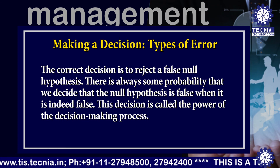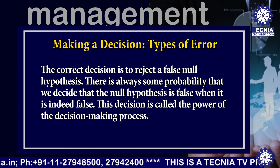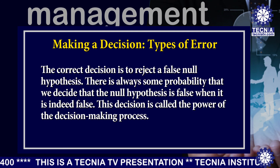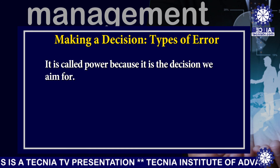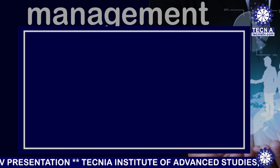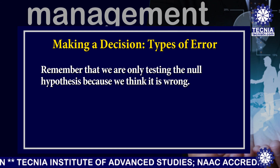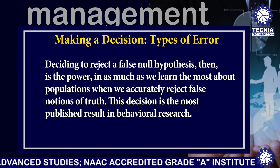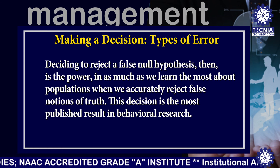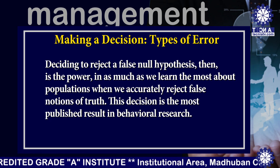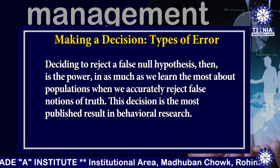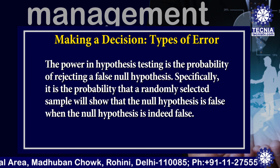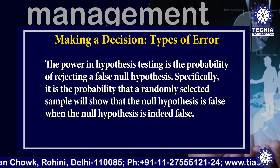The correct decision is to reject a false null hypothesis. There is always some probability that we decide the null hypothesis is false when it is indeed false. This decision is called the power of the decision-making process. It is called power because it is the decision we aim for — we are only testing the null hypothesis because we think it is wrong. Deciding to reject a false null hypothesis is the power, in as much as we learn the most about populations when we accurately reject false notions of truth. This decision is the most published result in behavioral research.